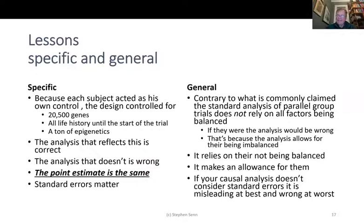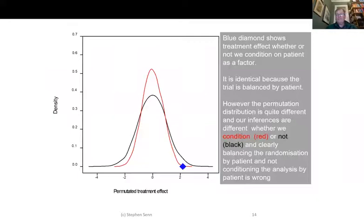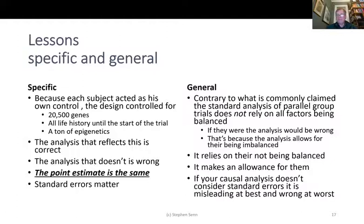There is a well-established statistical theory that tells you exactly what you should do. General lesson: contrary to what is commonly claimed, the standard analysis of parallel group trials does not rely on all factors being balanced — it relies on them not being in balance. The wider black curve allows for uncontrolled variation; the narrower red curve allows for the balanced variation. If all factors were balanced, standard errors would be far too big. If causal analysis doesn't consider standard errors, it is misleading at best and wrong at worst.